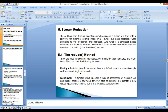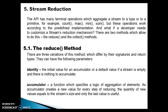Let's discuss what identity, accumulator, and combiner are. The reduce method has three variations referred to by their signature and return types. The first parameter is identity — this is the initial value of an accumulator, or the default value if a stream is empty and there is nothing to accumulate. The second parameter is the accumulator — a function which specifies the logic of aggregation of elements. The accumulator creates a new value for every step of reducing; the quantity of new values equals the stream size, and only the last value is useful.